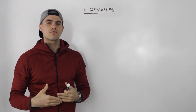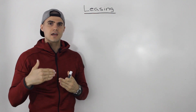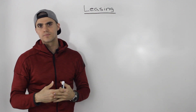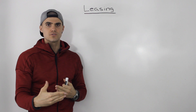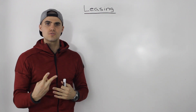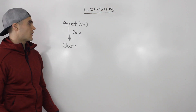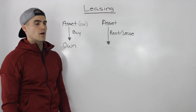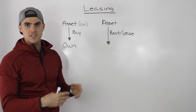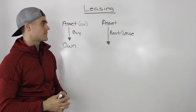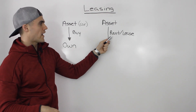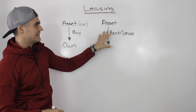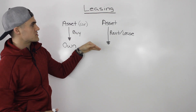To begin, let's start off with a very general example. Let's say that you own a company and you want to use a certain asset — let's say a car. To gain access to that car you have two options. The first option is you could straight up buy the car. The second option is you can rent the asset from someone else who owns it. In this section we're not going to use the word rent — instead we're going to use the word lease. They both mean the same thing.